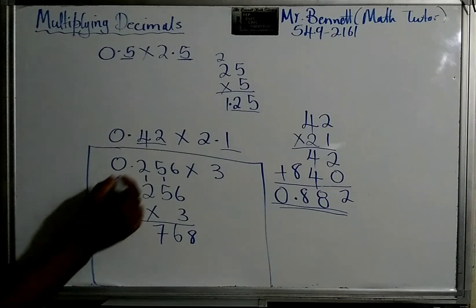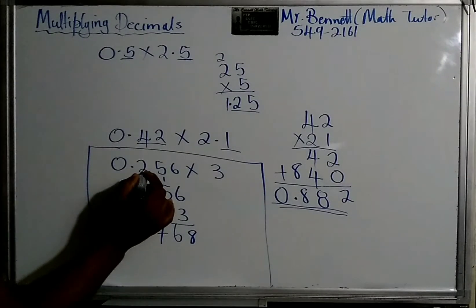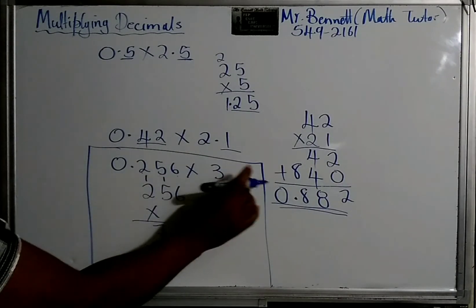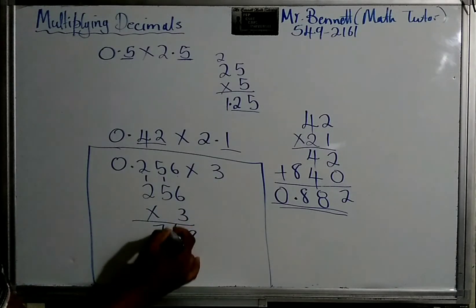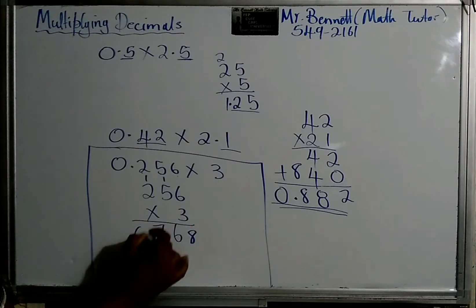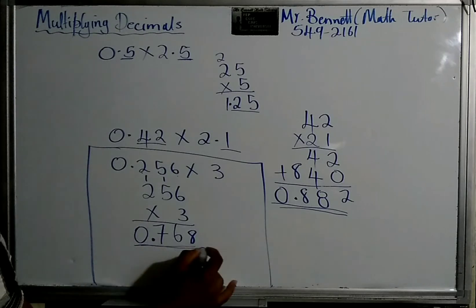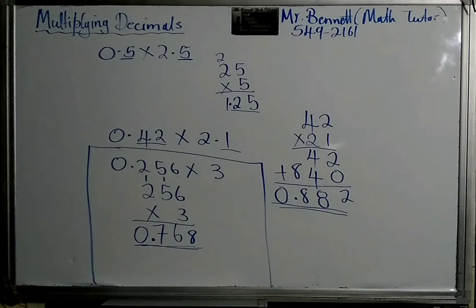Then, we count the number of decimal places. 1, 2, 3. There is no one here. So we just say 1, 2, 3. So the answer would be 0.768.